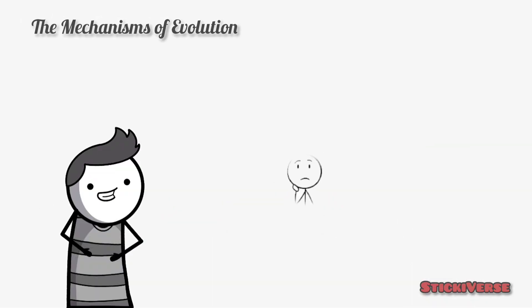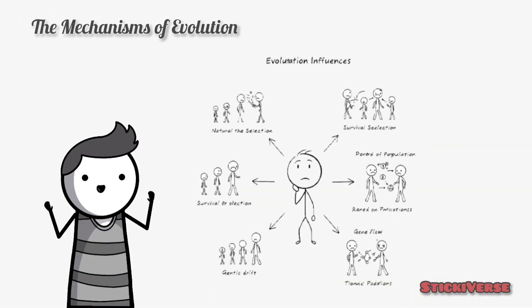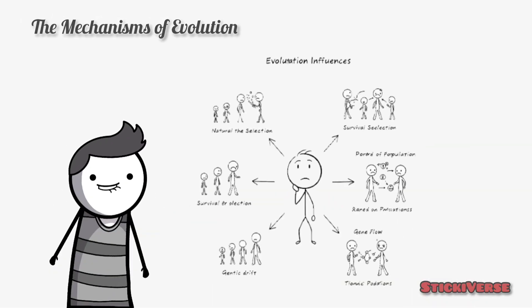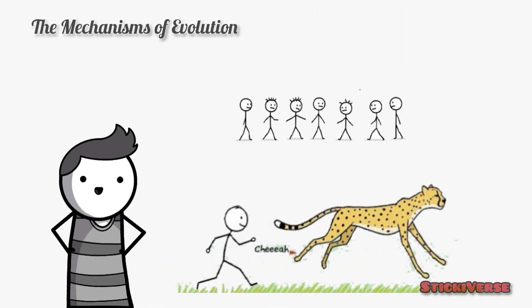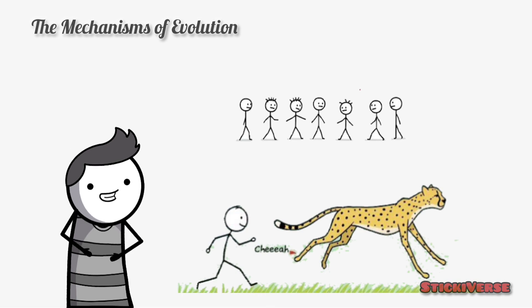Now, let's break down how evolution actually works. There are several key mechanisms that drive the process of evolution. Natural selection, often called survival of the fittest, is the primary mechanism.